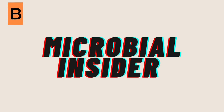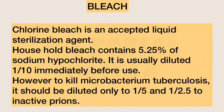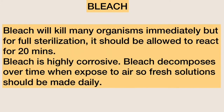Secondly, we have bleach. Chlorine bleach is an acceptable liquid sterilization agent. Household bleach contains 5.25% sodium hypochlorite and is usually diluted to one-tenth immediately before use. However, to kill Mycobacterium tuberculosis, it should be diluted to one-fifth, and to one-two-and-a-half to inactivate prions. Bleach will kill many organisms immediately, but for full sterilization it should be allowed to react for 20 minutes. Bleach is highly corrosive and decomposes over time when exposed to air, so fresh solutions should be made daily.